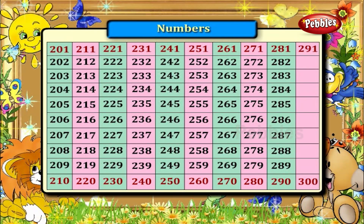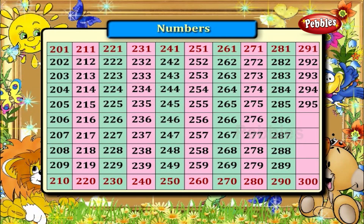Numbers between 291 and 300. They are 292, 293, 294, 295, 296, 297, 298 and 299.